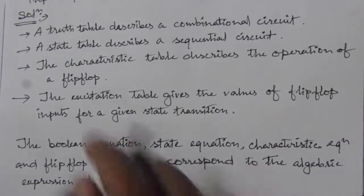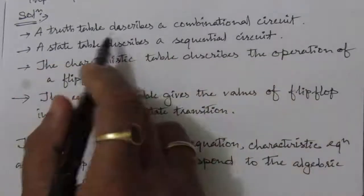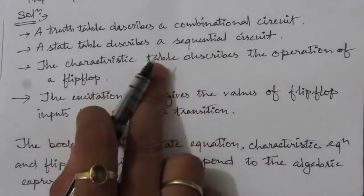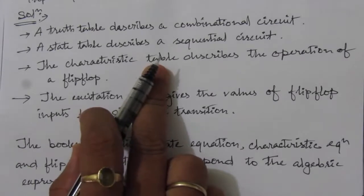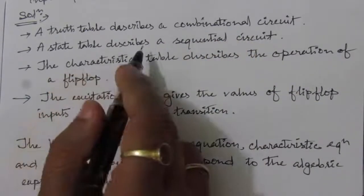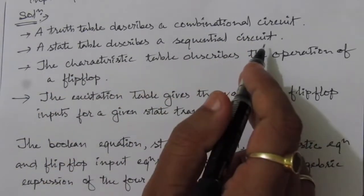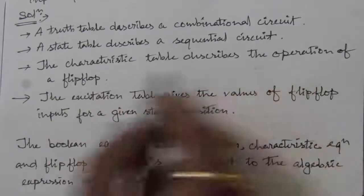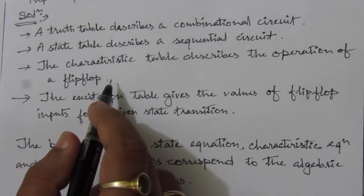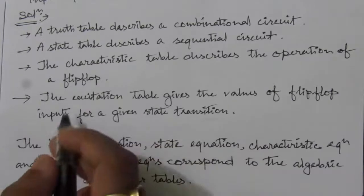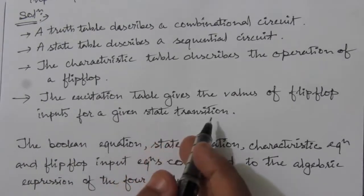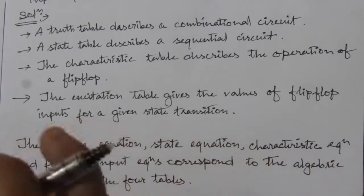Let me directly write down the answer. A truth table describes a combinational circuit — it gives the output for the respective input combinations. A state table describes a sequential circuit, where we have a memory element. The characteristic table describes the operation of a flip-flop; it gives the next state output in terms of the inputs and present state. The excitation table gives the values of the flip-flop inputs for a given state transition — the outputs are actually the inputs of the flip-flops.